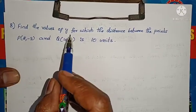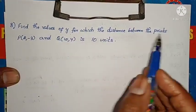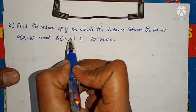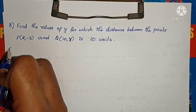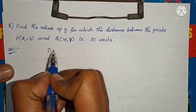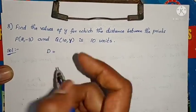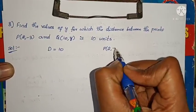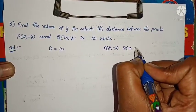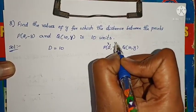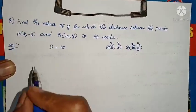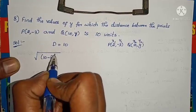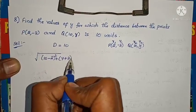Let me go to the next problem. Find the values of y for which the distance between the points P and Q is 10 units. They have given the distance — we have to find the y value. What is the formula for distance? Distance equals 10. Here two points are there: P is (2, -3) and Q is (10, y). Take P as x1, y1 and Q as x2, y2. What is the distance formula? Root of (x2 minus x1) whole square plus (y2 minus y1) whole square.